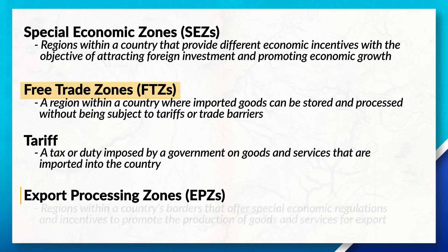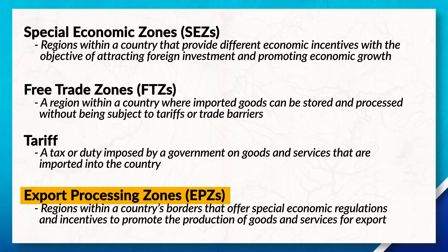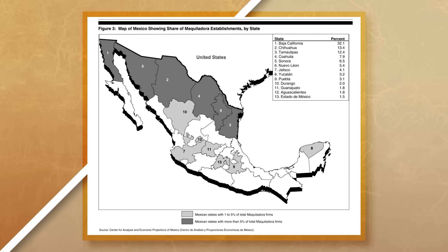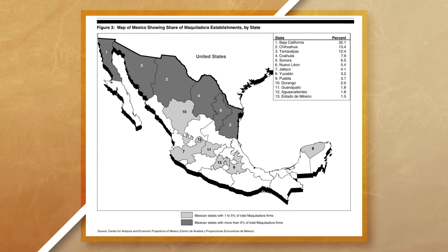Export processing zones are areas that have the goal of prioritizing the exportation of different goods out of the area, with a primary focus on manufacturing goods and then exporting them to a different country. An example of an export processing zone would be maquiladoras, which are manufacturing plants located in Mexico along the United States-Mexico border. This export processing zone was created by the Mexican government with the hopes of attracting foreign investment from the United States to produce products in Mexico.